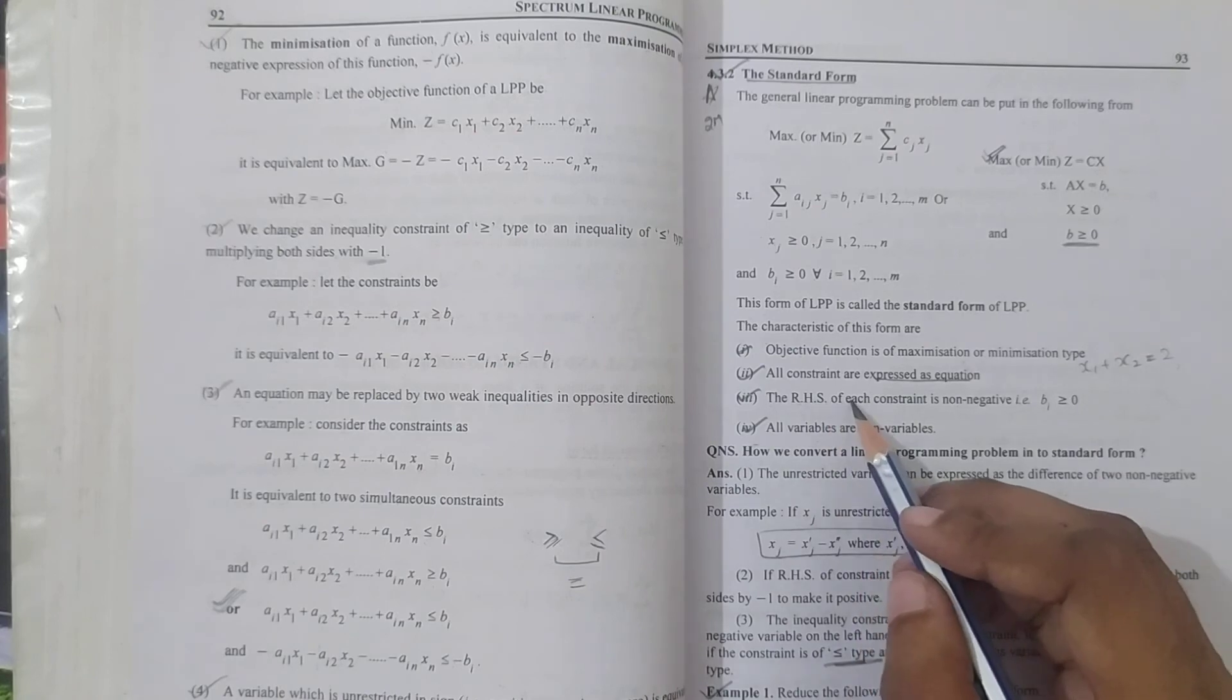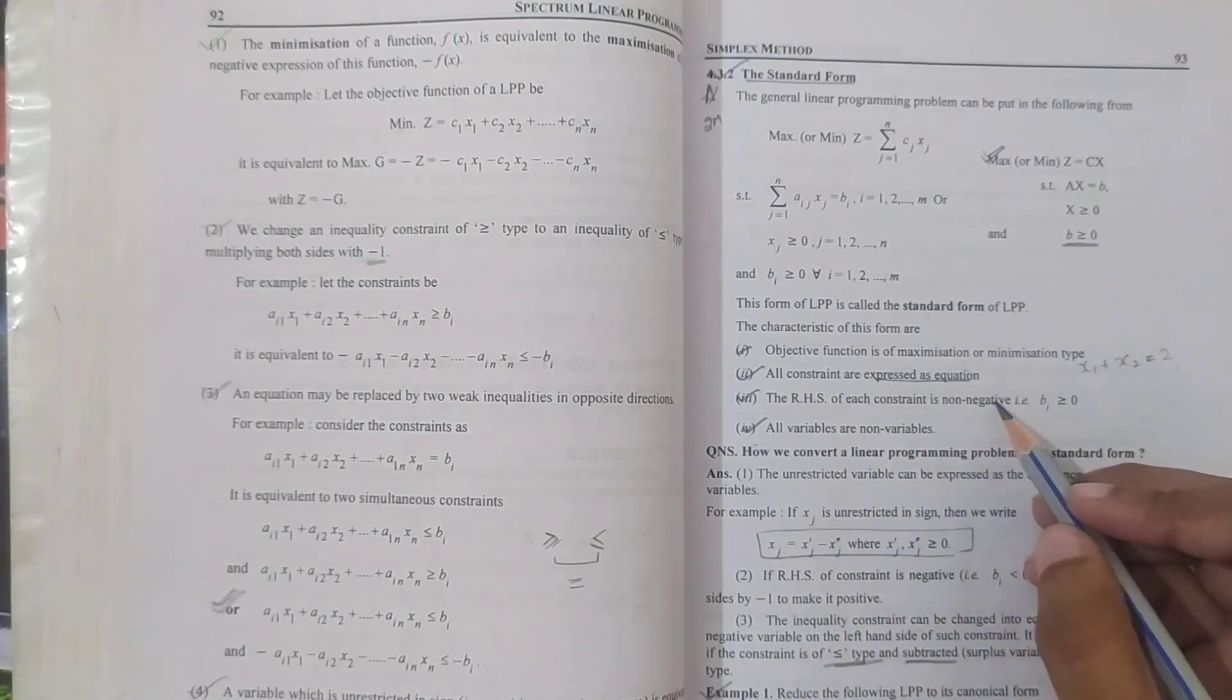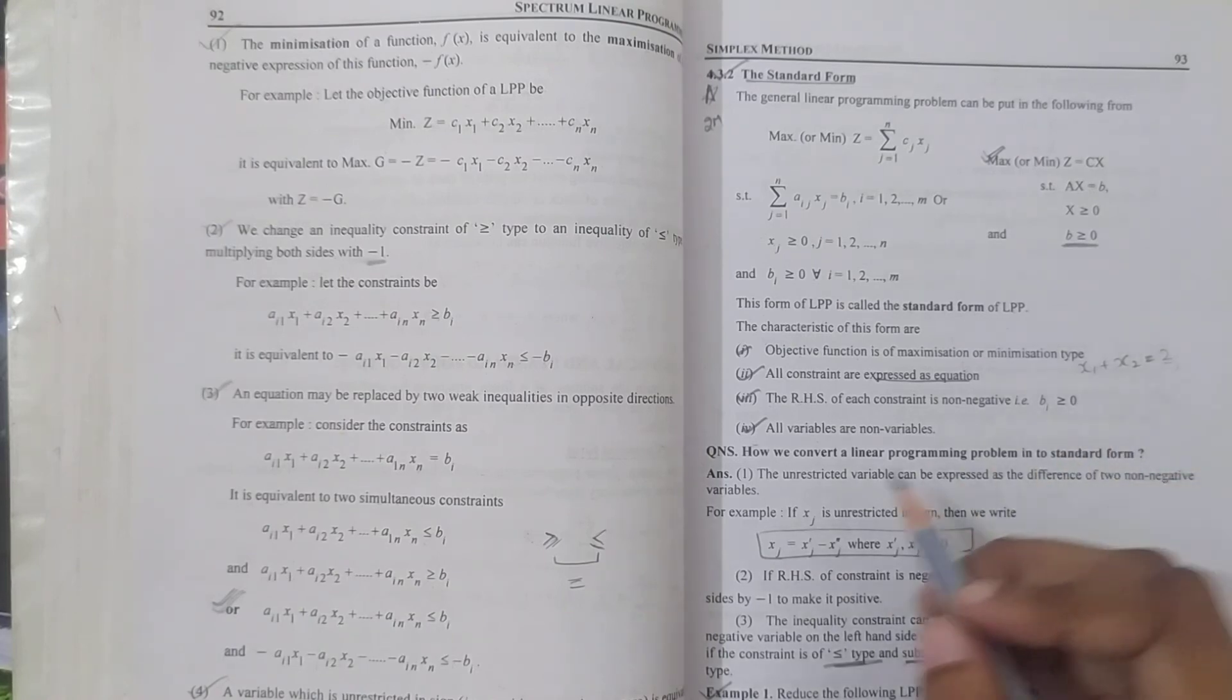The right-hand side of each constraint is non-negative. That means our b should be greater than or equal to 0.